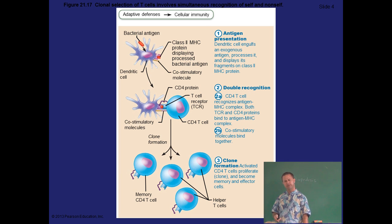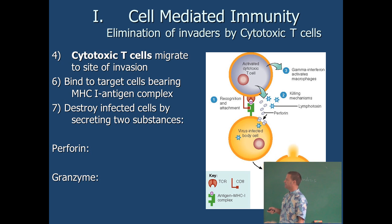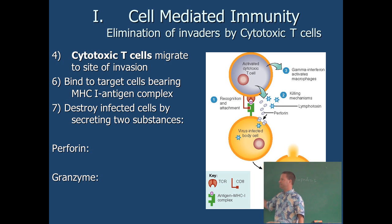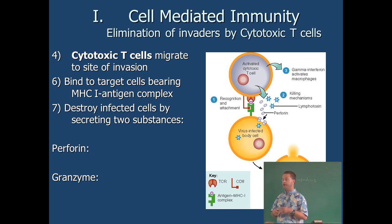Cytotoxic T cells kill virus-infected cells. The infected cell displays viral proteins alongside its own proteins in the membrane. The T cell binds to that, and then sends chemicals called perforin — which perforates the membrane — or granzyme. Both are toxic to the cell and kill the infected cell. For humoral immunity, antibodies are produced by B cells — don't get this wrong on an exam. B cells can bind to free antigens — bacteria don't have to be inside a body cell. When a B cell binds to a bacteria with a complementary protein, it becomes activated, undergoes clonal selection, and produces lots of plasma cells that all churn out the same type of antibodies. Memory B cells also form and enable a much quicker response upon re-exposure.